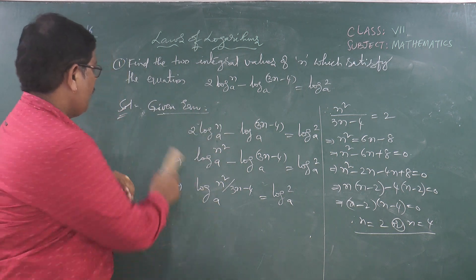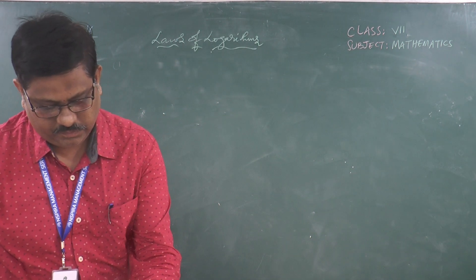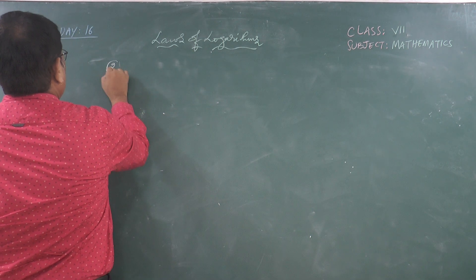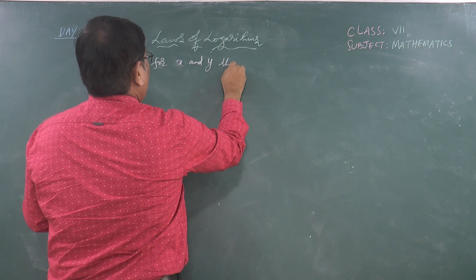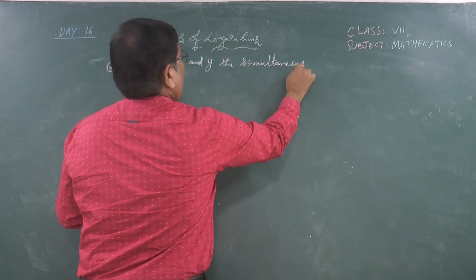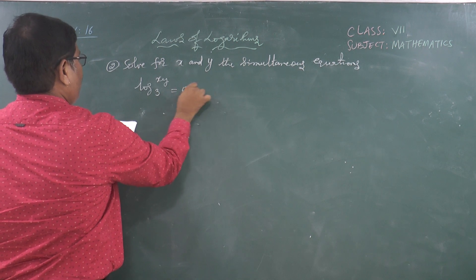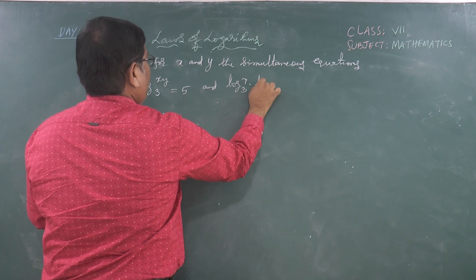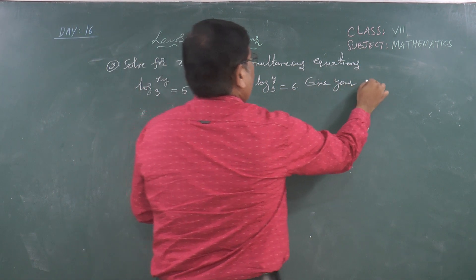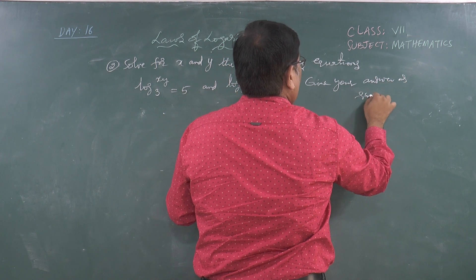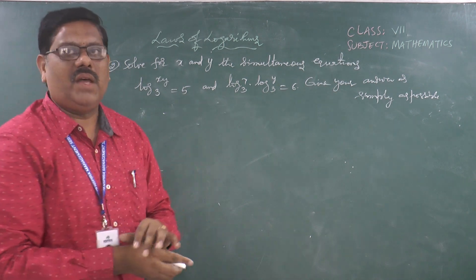Now we move to the next question: solve for x and y. We have simultaneous equations. Give the answer as simply as possible — that is, in lowest terms.